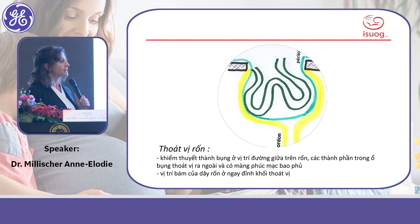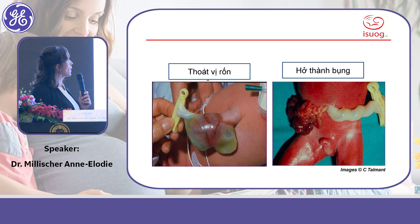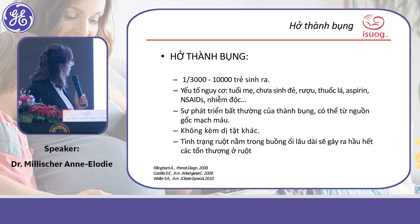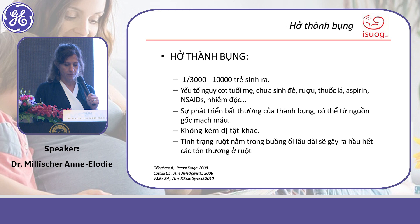In gastroschisis, it is usually the small bowel that herniates — liver herniation is rare. Gastroschisis is often related to maternal young age, alcohol use, nulliparity, smoking, use of NSAIDs, or exposure to toxic substances. It concerns young women.